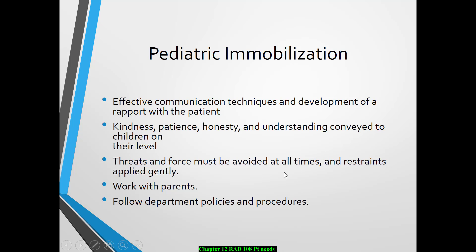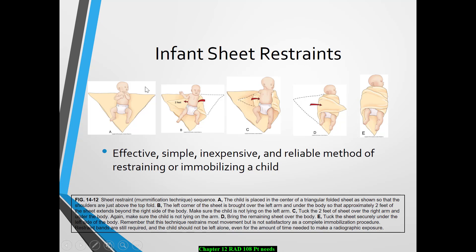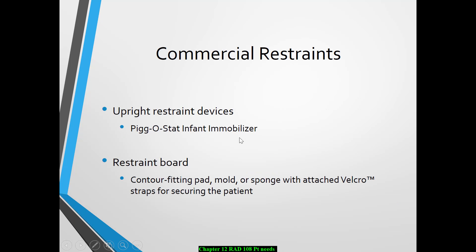For pediatric immobilization, we typically use stockinets and pigostats. With children you want to communicate effectively, have lots of patience, and communicate on their level. Any threats or force should be avoided — it's just going to scare the patient and they won't cooperate. If parents come into the room, explain what you're doing because those devices can look scary. An infant sheet restraint is essentially swaddling your patient so that those arms are tied to their sides and they're not moving on the x-ray table. The pigistat helps immobilize infants for chest and abdomen work.